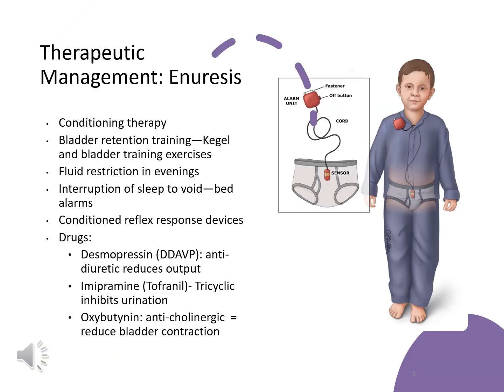So what do we do with kids who present with enuresis? After careful evaluation and ruling out any structural problem, infection, or disease process, we start with behavioral modifications — putting them on a scheduled routine of going to the bathroom and making sure we're avoiding liquids late in the evening, like nothing after six o'clock. Those are the first-line treatments.